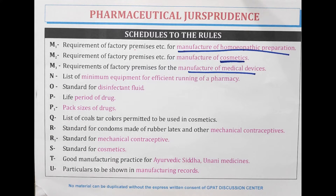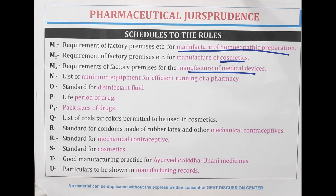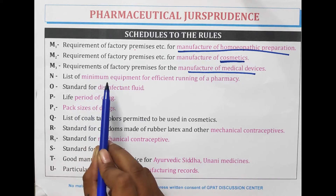Schedule N is the list of minimum equipment for efficiently running a pharmacy. A pharmacy must have minimum equipment such as a refrigerator or fridge, or we could consider other storing devices that are in the list.